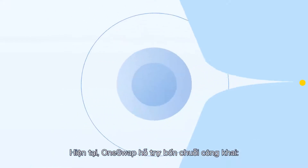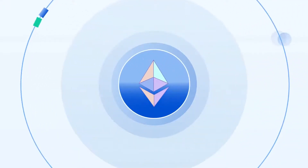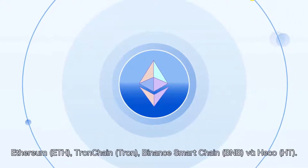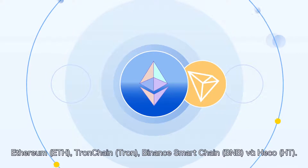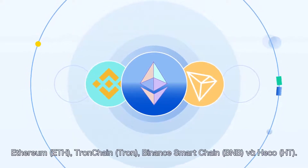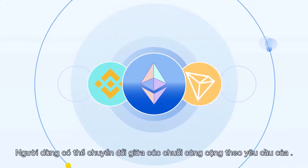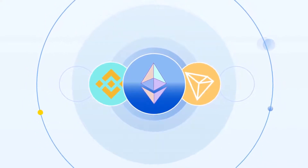Currently, OneSwap supports three public chains: Ethereum (ETH), TronChain (Tron), and Finance Smart Chain (BNB). Users can switch between the public chains as needed.